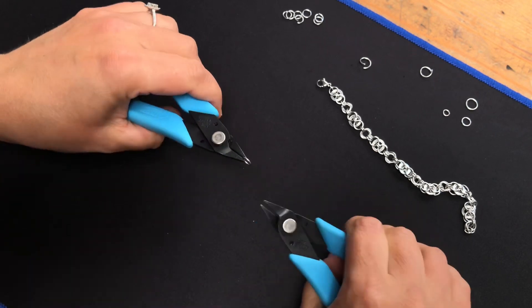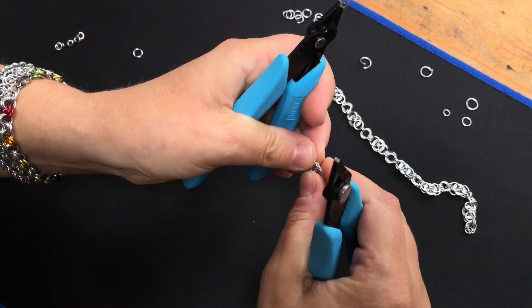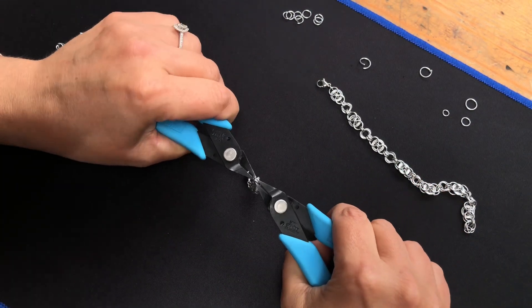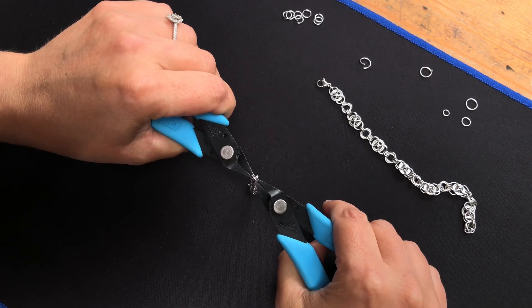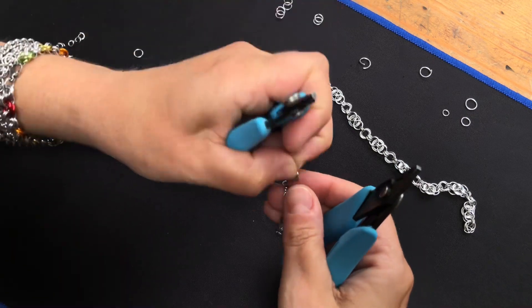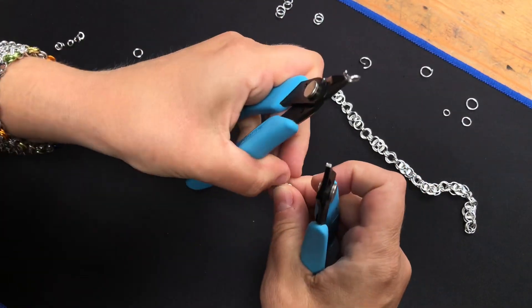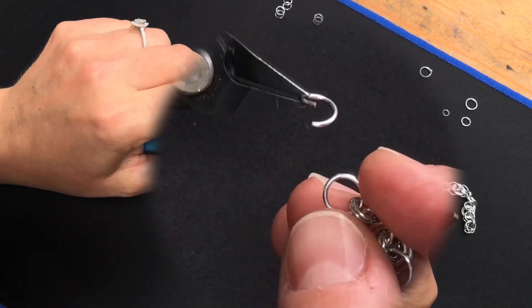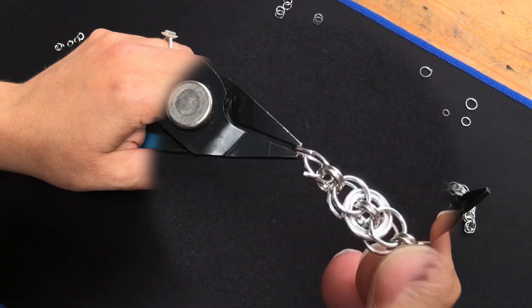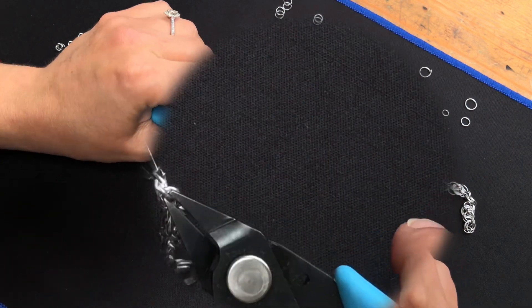And then take a medium ring and through the small rings. And then another medium. Again, to do mobius we pick up one medium, we go through the two smalls, and close it up.